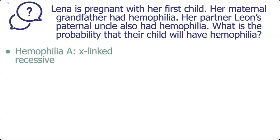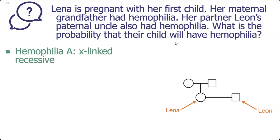This is from class where we were talking about hemophilia A, and remember that hemophilia A is X-linked recessive. Let's start by drawing the pedigree. We draw a circle for Lena because she's female, and her partner is Leon so we draw a square. Starting with Lena's side, we show her parents. Her maternal grandfather — that's her grandfather on her mom's side — is colored in black because the grandfather showed the trait of hemophilia A.